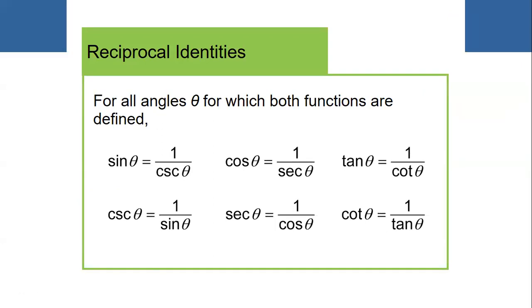These are your reciprocal identities. Reciprocal identity means these are the ones that are opposite to each other — if I know one, then I know the other. For sine θ, its reciprocal is cosecant θ, meaning I can substitute sine θ with 1 over cosecant θ. Cosine θ is 1 over secant θ, tan θ is 1 over cotangent θ, cosecant θ is 1 over sine θ, secant θ is 1 over cosine θ, and cotangent θ is 1 over tan θ.